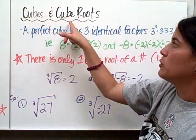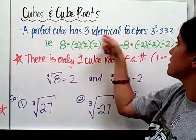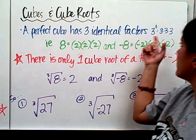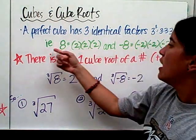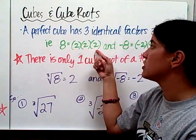So a little bit more information about cubes and cube roots. A perfect cube has three identical factors like what we just talked about and here's another example. So for example, 8 equals 2 times 2 times 2.